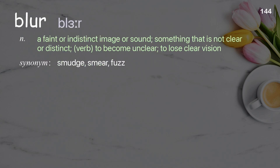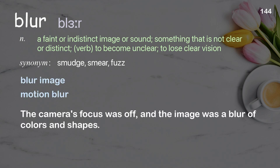Blur: a faint or indistinct image or sound; something that is not clear or distinct; verb meaning to become unclear or to lose clear vision. Examples: blur image, motion blur. The camera's focus was off and the image was a blur of colors and shapes.